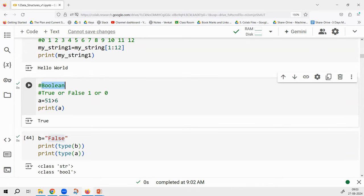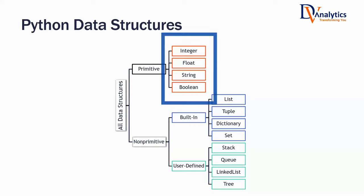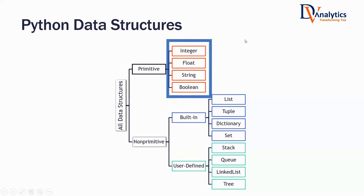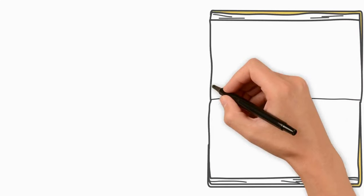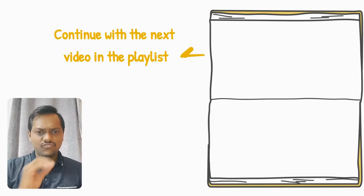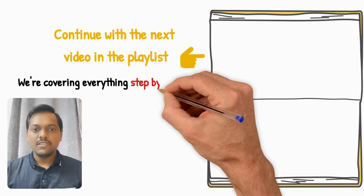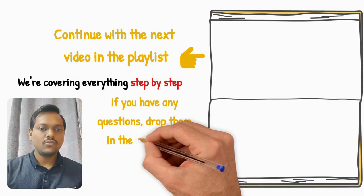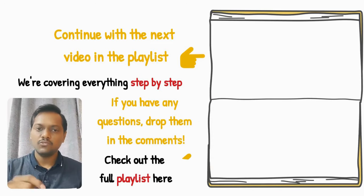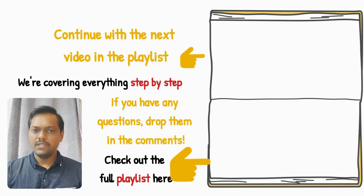These are the primitive data types in Python — integer, float, string, and boolean. They are very basic and required in every programming language. Continue with the next video in the playlist. We are covering everything step by step. If you have any questions or comments, please post them in the comments section below.